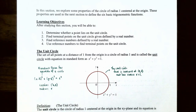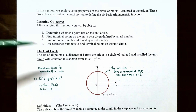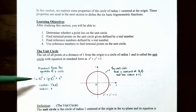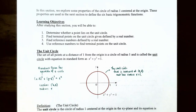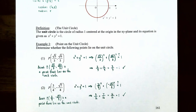The unit circle is the set of all points at a distance of 1 from the origin — a circle of radius 1 with equation x² + y² = 1. Recall the standard form for a circle: (x − h)² + (y − k)² = r², where the center is (h, k). For the unit circle, the center is (0, 0) and radius is 1, giving x² + y² = 1.